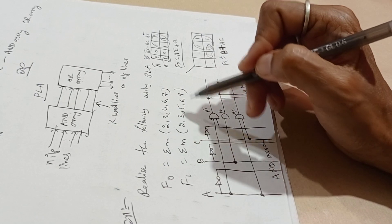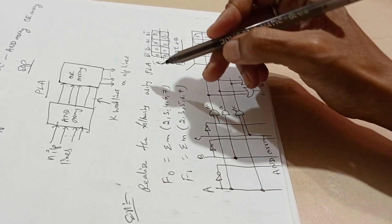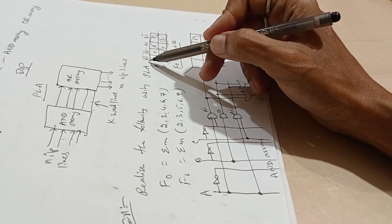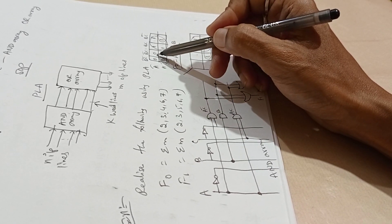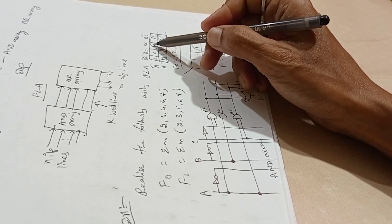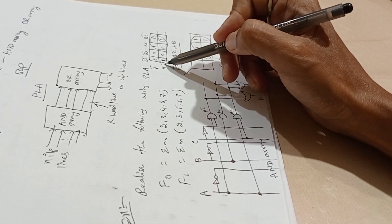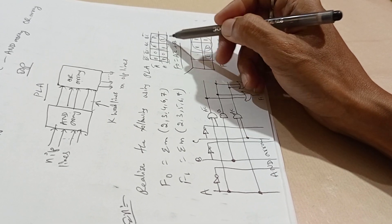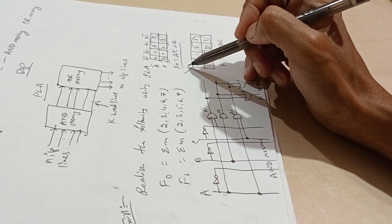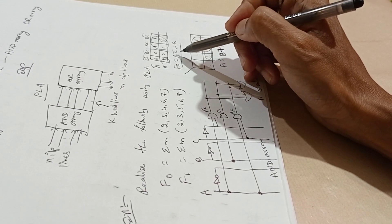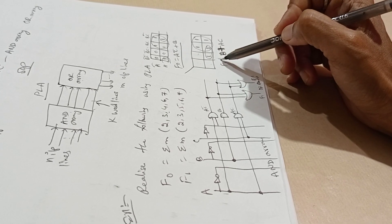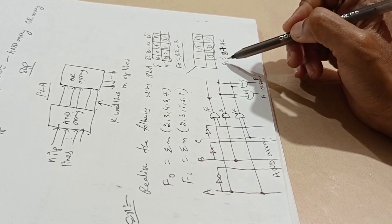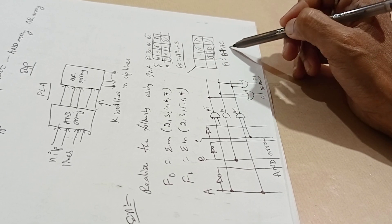First, we need to minimize this and get the expression SOP. Draw the K-map for A, B, C. Place the values 0, 1, 2, 3, 4, 5, 6, 7. Using grouping method, get the minimized SOP. F0 becomes AC bar plus B. When you solve and minimize using K-map, you will get F1 equals B plus AC.